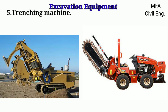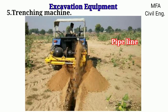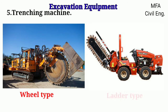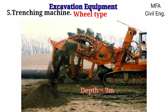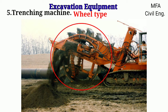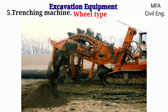Trenching machines are used for excavating a trench for laying pipelines, sewers, and cables. Their operation is quick, giving the required depth and width. There are two types of trenching machines: wheel type and ladder type. The wheel type trenching machine can be used for providing a depth up to three meters and a width ranging from 0.3 meters to 0.6 meters. This machine consists of a power-driven wheel provided with a number of detachable buckets having cutting teeth. The earth picked up by the buckets is deposited on a belt conveyor which discharges it to the side of the trench.